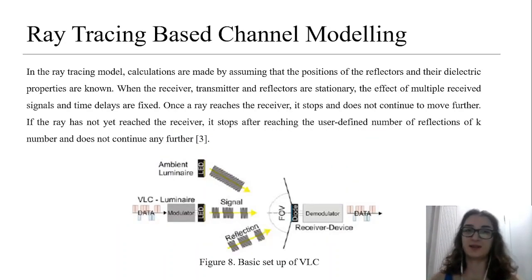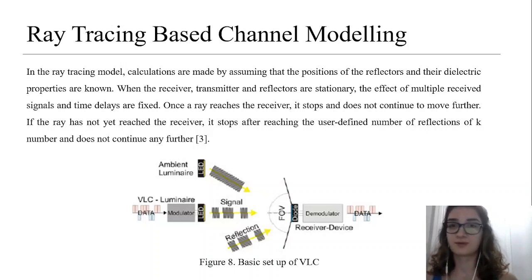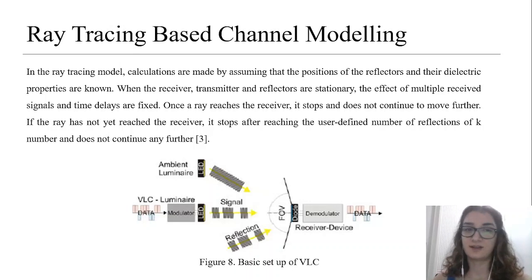Ray tracing based channel modeling: In the ray tracing model, calculations are made by assuming that the positions of the reflectors and their dielectric properties are known. When the receiver, transmitter, and reflectors are stationary, the effects of multipath received signals and time delays are fixed. Once a ray reaches the receiver, it stops and does not continue to move further. If the ray has not yet reached the receiver, it stops after reaching the user-defined number of reflections and does not continue any further.